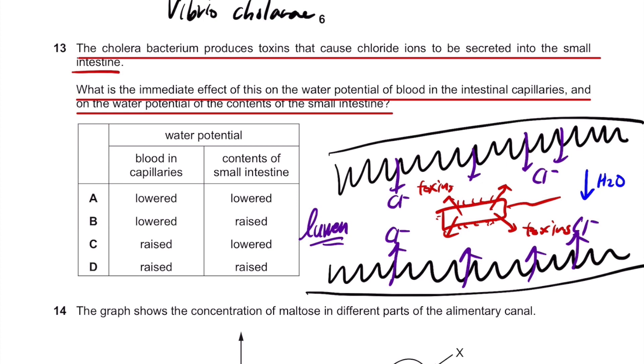Hence, relatively, the capillaries in the small intestine has higher, higher water potential than inside the lumen. So this is the immediate effect of these toxins.